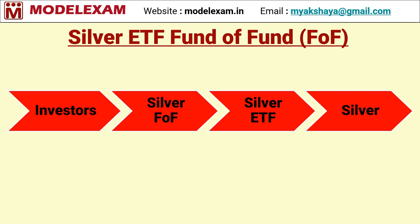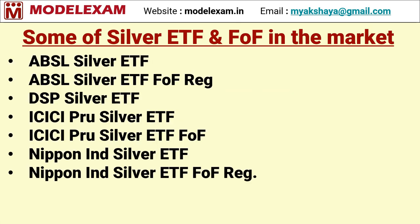So these are some of the advantages. The drawback is double expenses; the advantage is that no DMAT account is needed — you can directly approach the AMC, buy or sell units, start a SIP, and invest as low as 1000 or 2000 monthly. A list of silver ETFs and silver Fund of Funds available in the market is given below. Please note these are not recommendations or promotions of any scheme. If you want to invest in silver ETF, kindly consult your mutual fund advisor or investment advisor and invest accordingly.